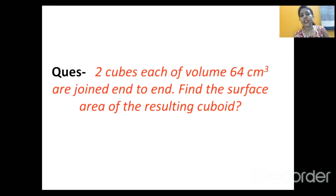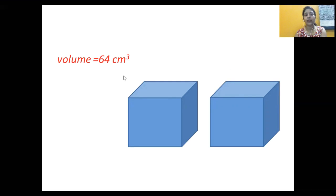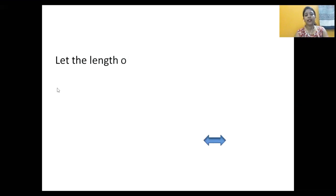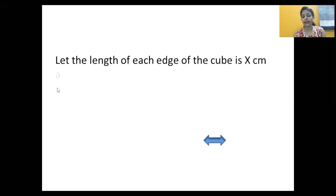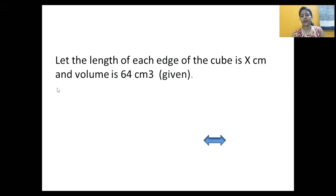Now the question is: two cubes each of volume 64 cm³ are joined end to end — find the surface area of the resulting cuboid. To solve this, we will first calculate the edge length of each cube. Let the edge length of each cube be x centimeters, and the volume is given as 64 cm³.